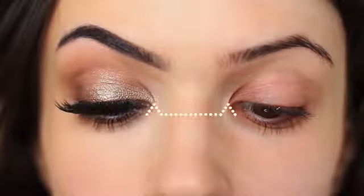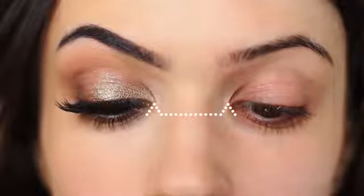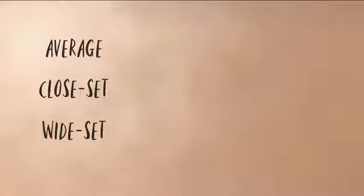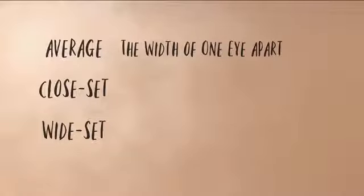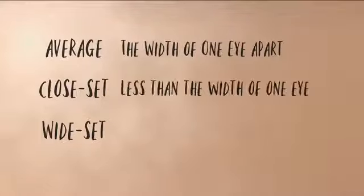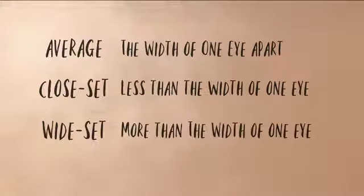In our previous video we talked about finding your eye spacing and figuring out which of the three categories you fit into: average, close, or wide set. This refers to the distance between the eyes. The so-called average spacing between two eyes is the width of one eye length apart. If it's less than one eye length apart it's considered close set, and if it's more than one eye length apart it's considered wide set.